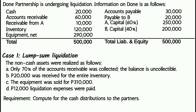Case 1: lump sum liquidation. The non-cash assets were realized as follows: A — only 70% of the accounts receivable was collected, the balance is uncollectible; B — 20,000 pesos was received for the entire inventory; C — the equipment was sold for 310,000 pesos; and D — 12,000 pesos in liquidation expenses were paid. Requirement: compute for the cash distributions to the partners.